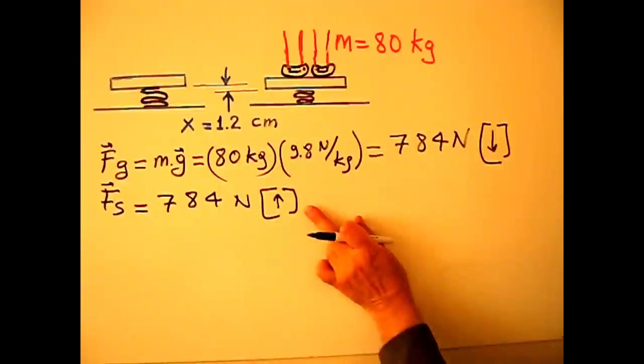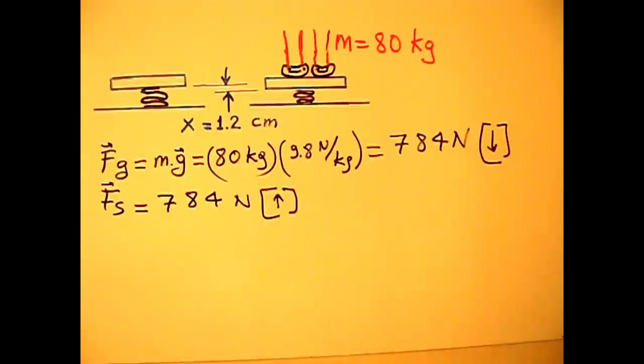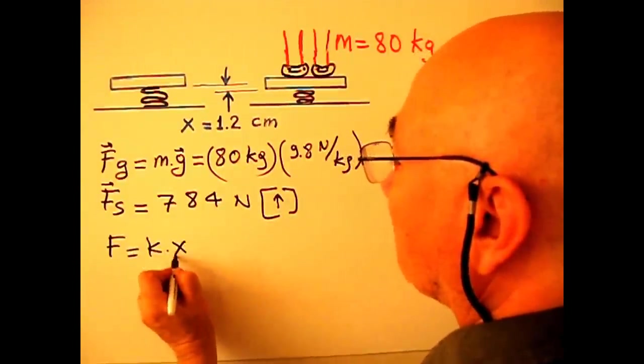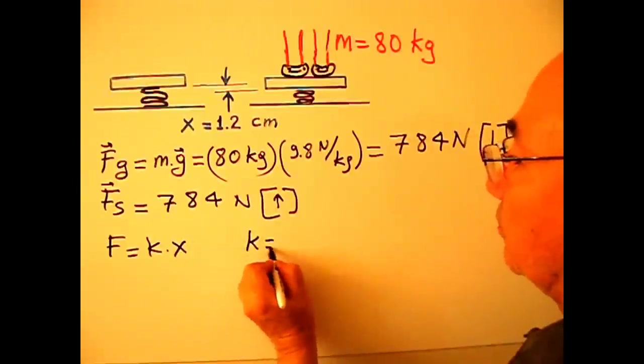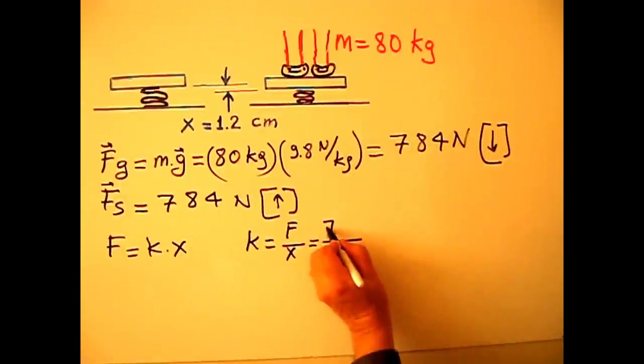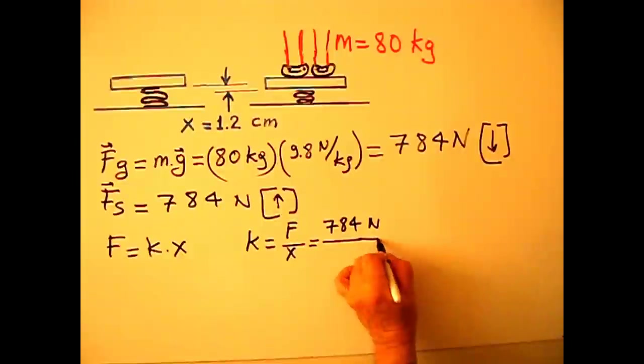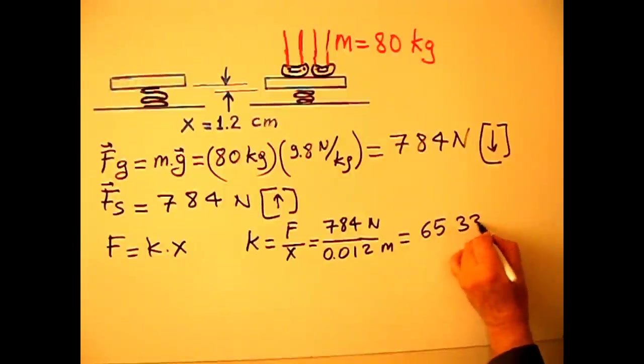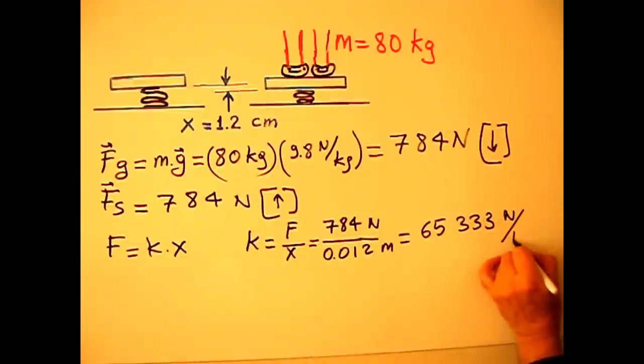FS will be in the opposite direction, same magnitude, 784 newtons up. This is the reaction force, the force exerted by spring scale on me. Second question: Find the spring constant. As you know, F equals k times x. From here, k equals F over x. F will be 784 newtons. x, I have to convert to meters, 0.012 meters. From here, I calculated 65,333 newtons per meter.